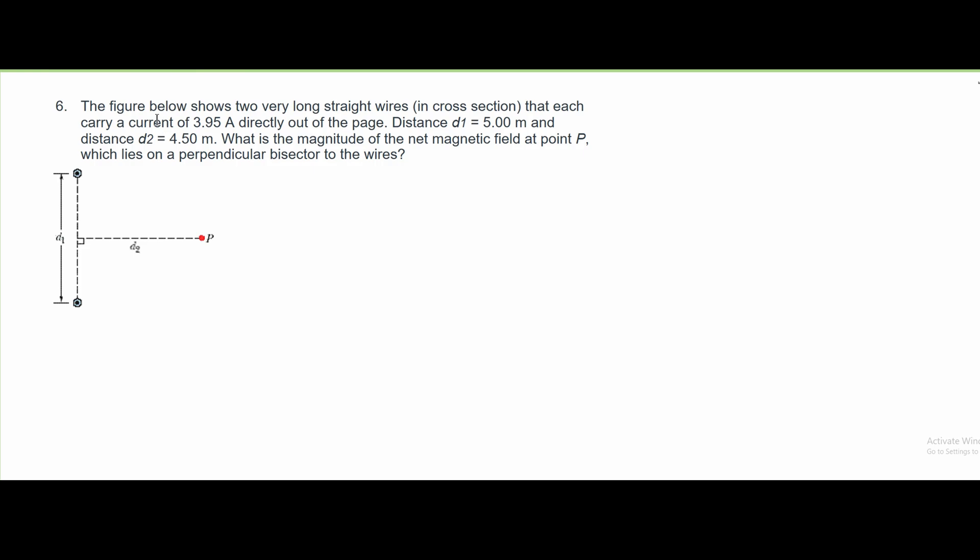Number six: The figure below shows two very long straight wires in cross-section, each carrying a current of 3.95 amps. Both wires have the same current I = 3.95 amps going directly out of the page. The distance d1 equals 5 meters and d2 equals 4.5 meters.